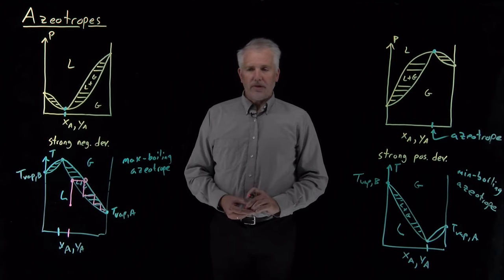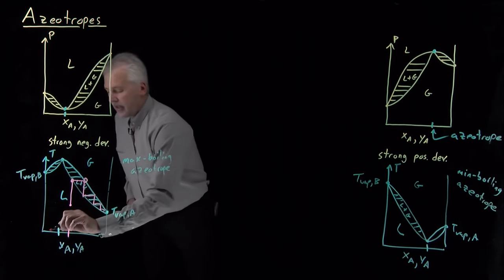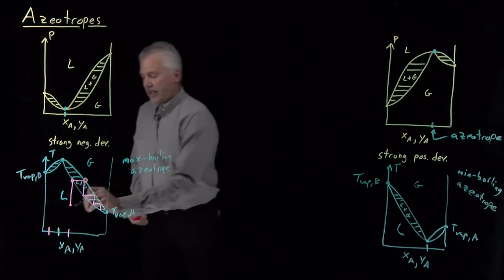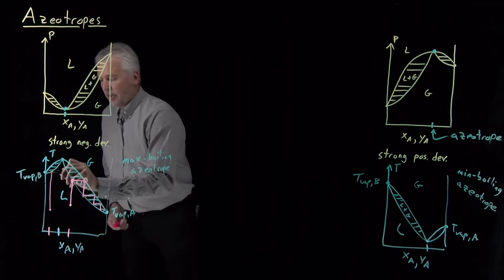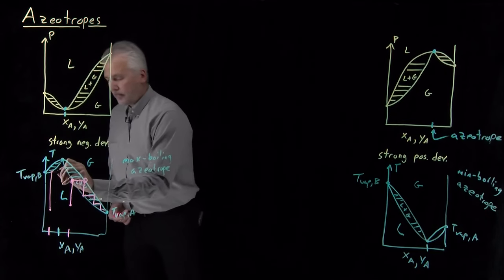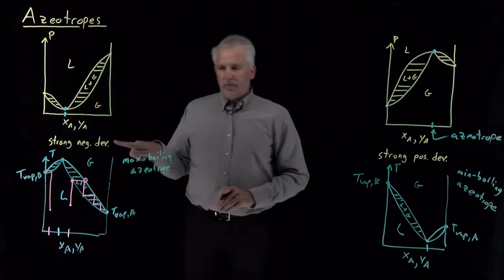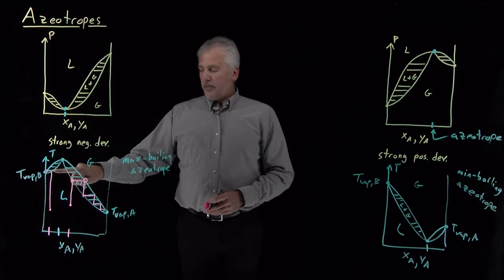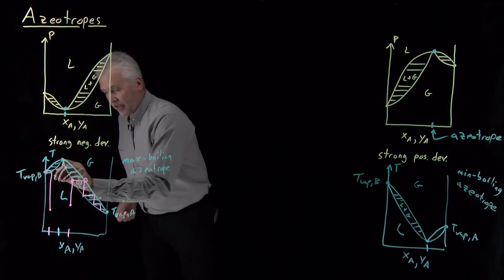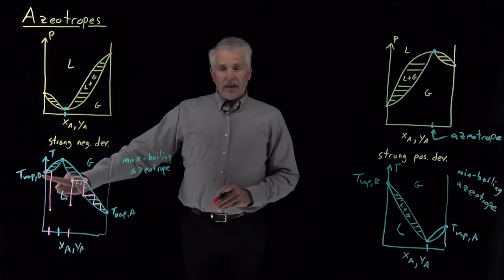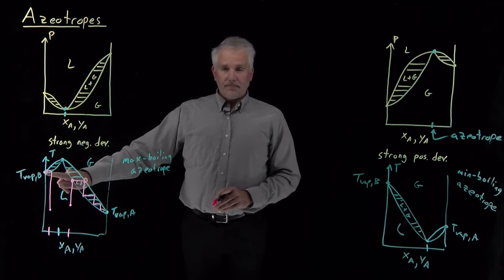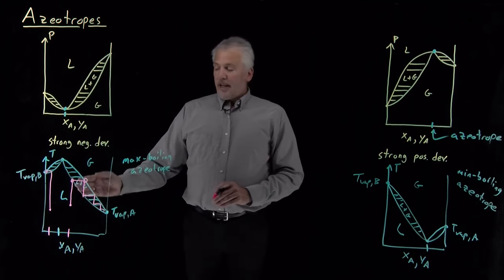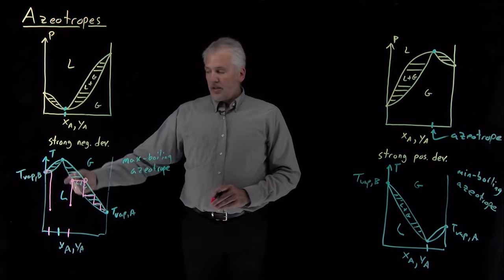Notice what happens if the concentration is very B-rich — over on this portion of the temperature-composition phase diagram. If I heat this system until it boils, the vapor composition has become enriched in component B and is more dilute in component A. So the enrichment happens in the opposite direction, and fractional distillation now yields purified solvent B. In this max boiling azeotrope system, I can purify either solvent A or solvent B depending on which side of the azeotrope I start on.